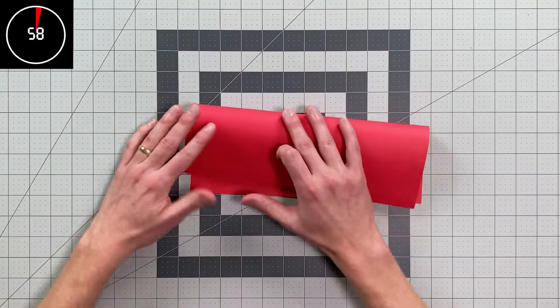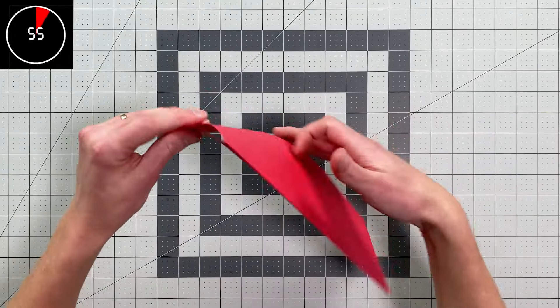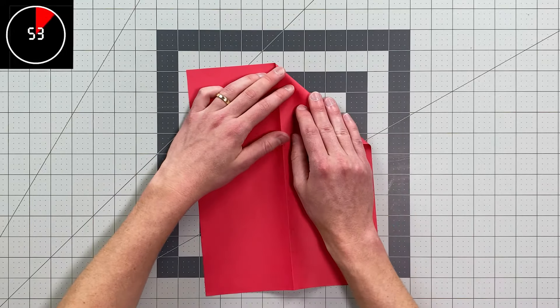Fold it in half like so, open that up, and fold triangles to your center crease.